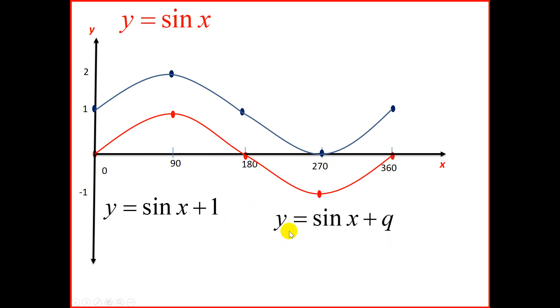So our conclusion here is y equals sine x plus q. So q shifts the graph up or down. If it's plus 1, it will go up. If it's negative 1, the graph will move 1 unit down.